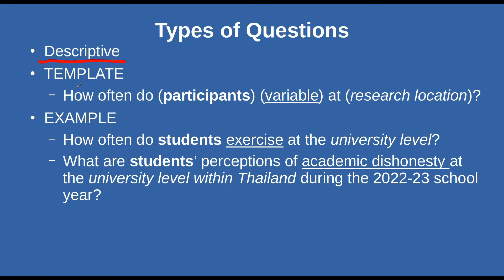Let's look at our example: 'How often do students' — these are our participants — 'exercise?' — this is our variable — 'at the university level?' — this is our location. So the three parts are there. If I'm counting how often they exercise, that's probably just a count — they exercise five or ten times a week. If I really want to tighten up this question, I might want to put in a time limit, like within one week or within two weeks.